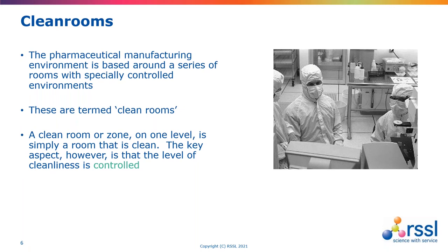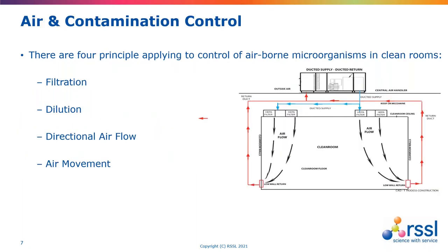If we consider the outside environment, typically the air contains around 35 million particles per cubic metre. In a grade B clean room, we're seeking particulate levels hundreds of thousands of times less than that. So we need to exclude those particles from entering the clean room, ensure particles generated within the room don't settle in critical places, and drive those particles out of the room fairly rapidly. We achieve that through four key principles: filtration, dilution, direction, and air movement.